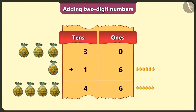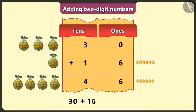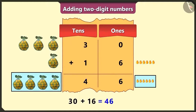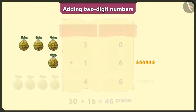So how many total number of grains are here now? Yes — here there are 3 tens or 30. And if we add 1 ten and 6, that is 16, we get a total of 46 grains. Well done, Pillu. So come on.